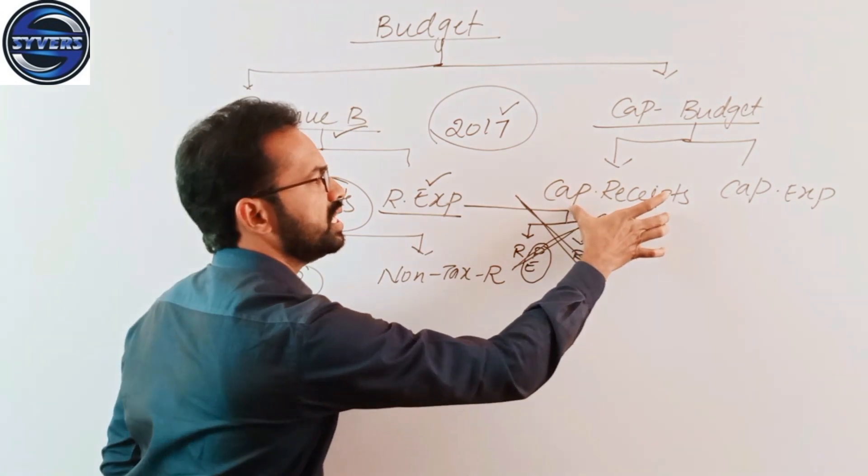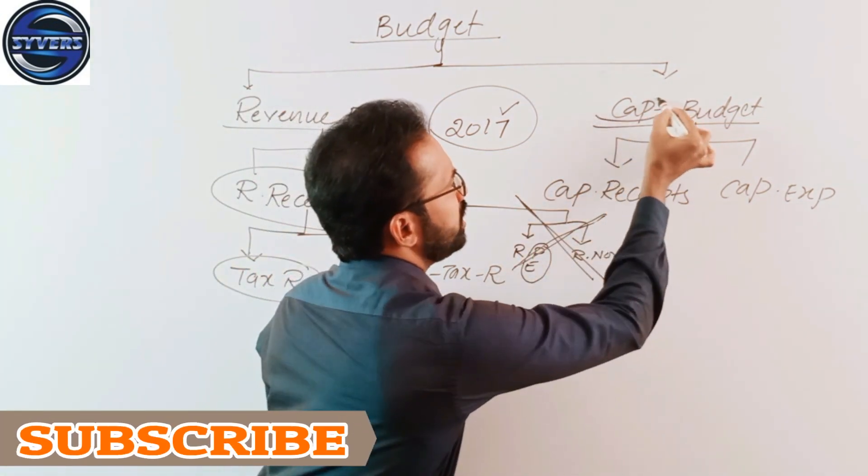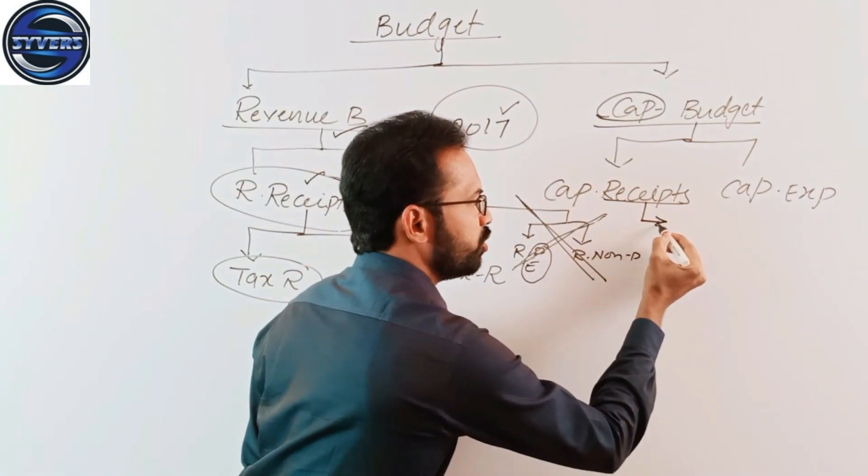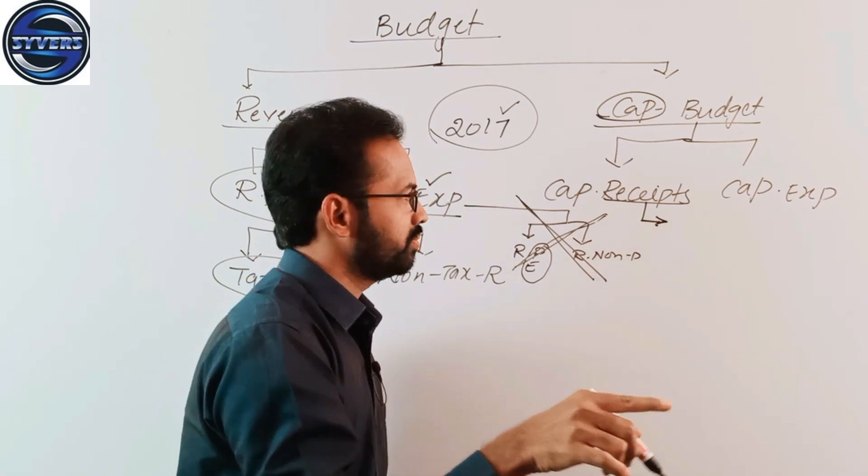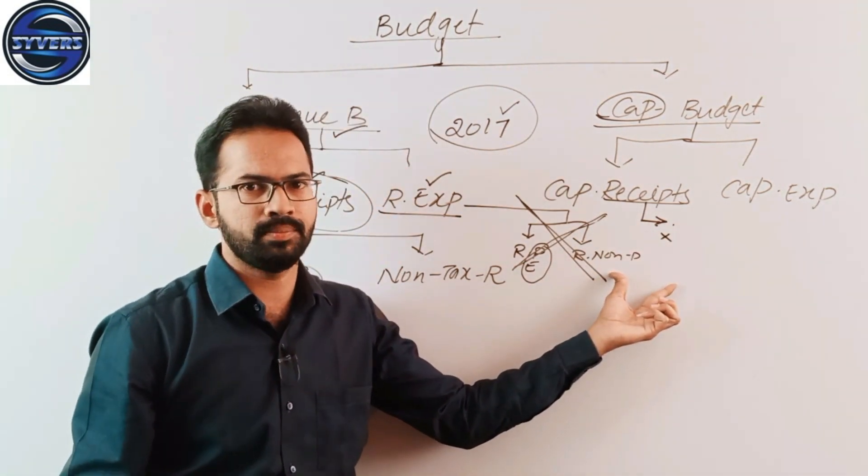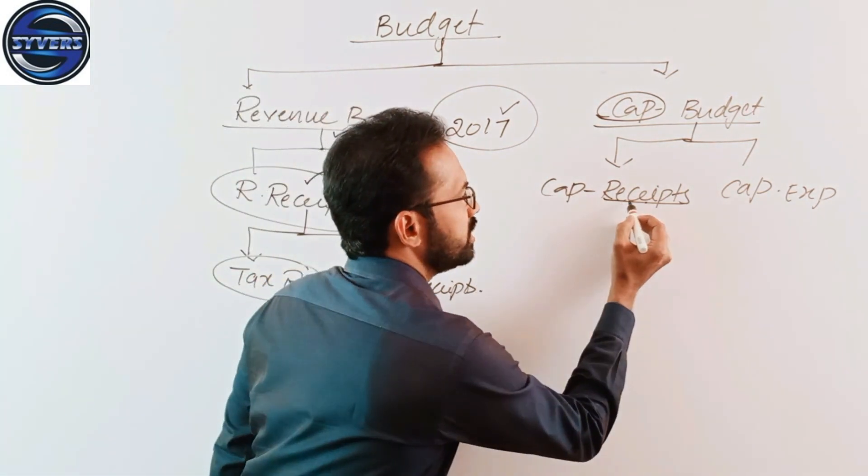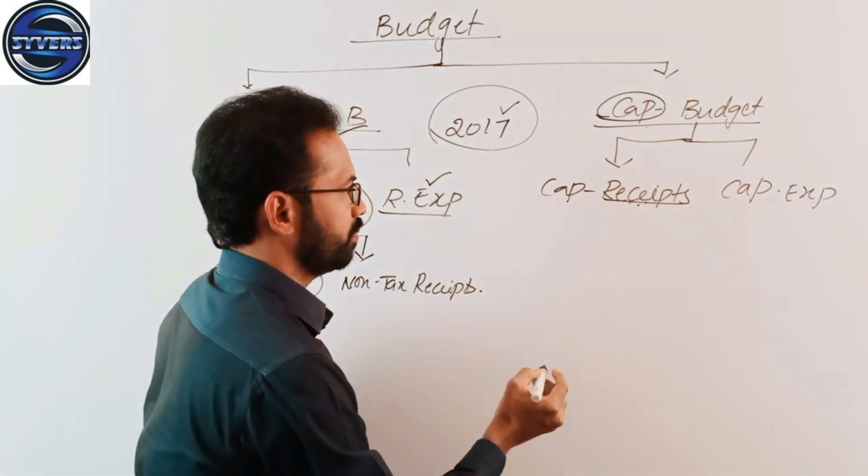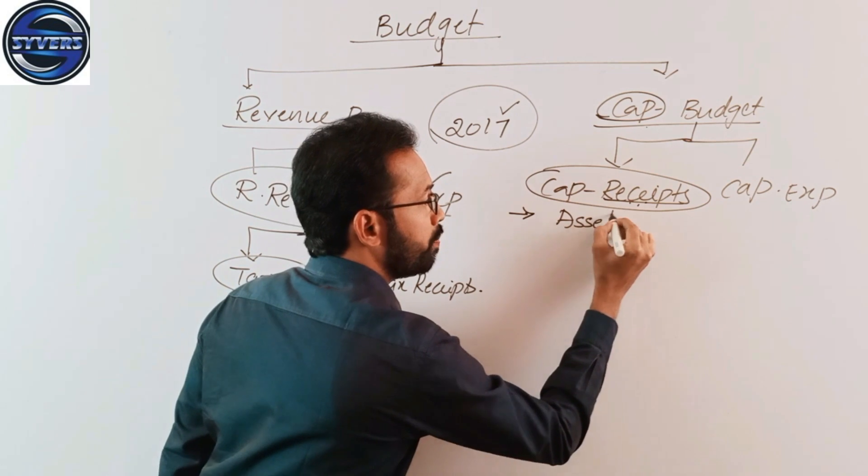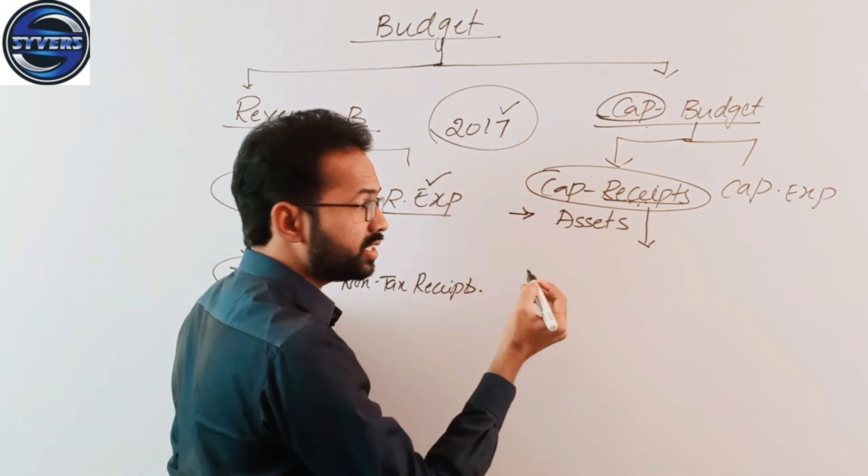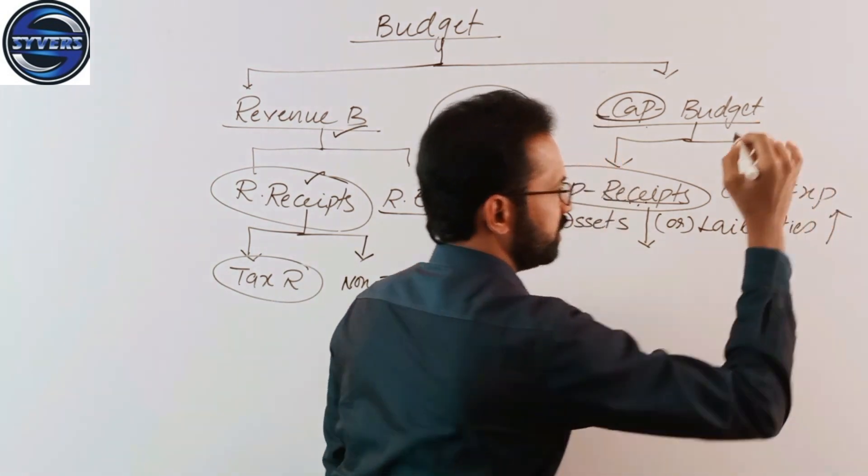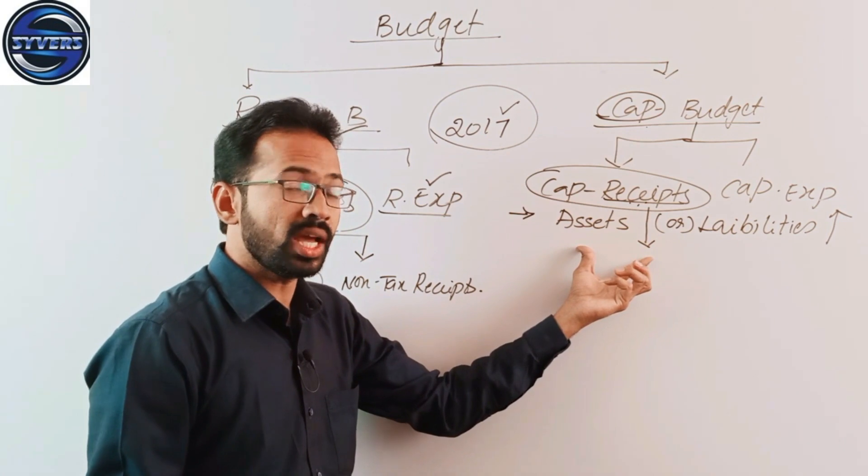Now let's look at capital budget. Capital receipts are not recurring in nature, they are first-time receipts. Capital receipts involve either decrease of assets or increase of liabilities.